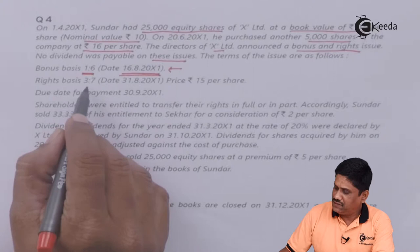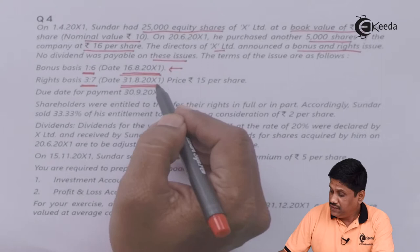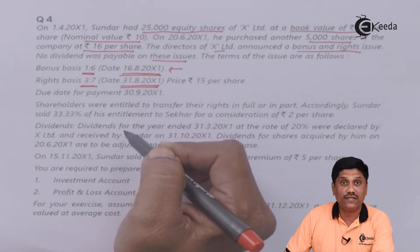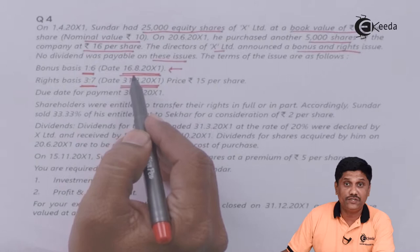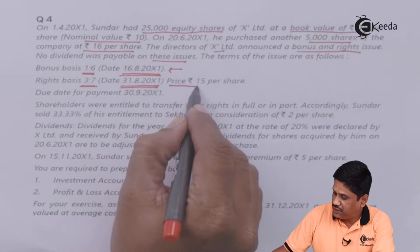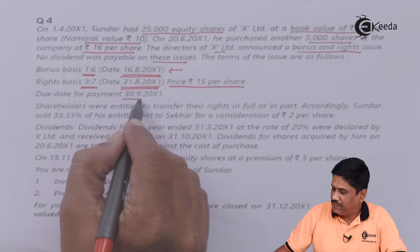Right basis is 3:7. Date given is 16th August 200X1 and the record date is 31st August X1. The due date for payment is 30th September 200X1. If you have right shares, payment must be made by 30th September 200X1.